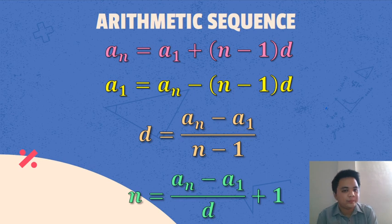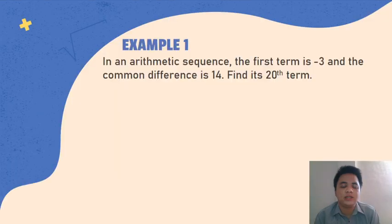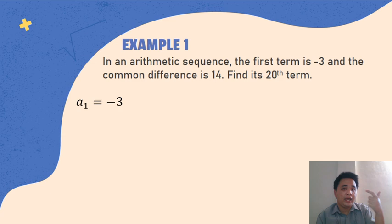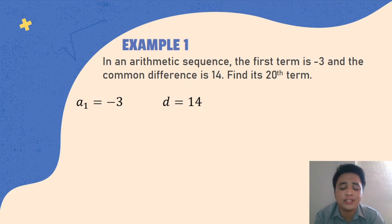Let's proceed with Example number 1. We have an arithmetic sequence where the first term is negative 3, the common difference is 14, and we are asked to find its 20th term. The first step is to find all the given. So, A sub 1 equals negative 3, the common difference d equals 14. And since we are finding the 20th term, that means n equals 20.